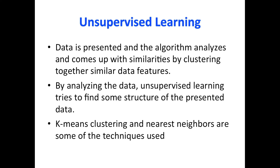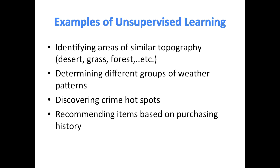K-means clustering and nearest neighbors are some of the techniques used in unsupervised learning. Let's see some examples: identifying areas of similar topography like desert, grass, forest and so on; determining different groups of weather patterns; discovering crime hotspots; and recommending items based on purchasing history.